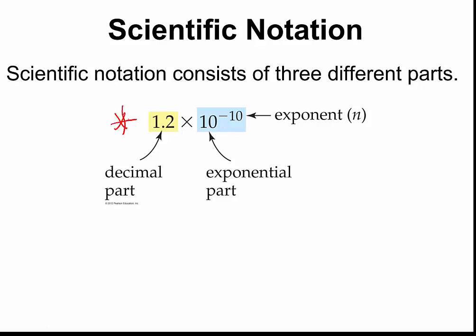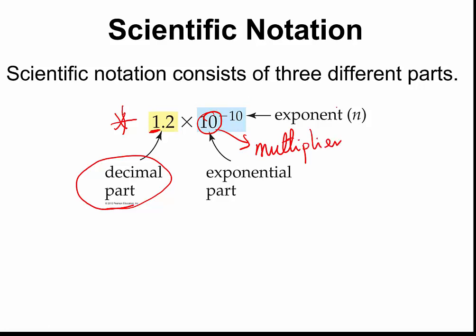This is what a number in scientific notation looks like. There are three parts: there is a decimal part, and the most important thing to note is that the decimal point is after the first number. There is the exponential part, which has two components: the multiplier and the exponent. The multiplier is usually 10, and the exponent is an integer — a positive or negative whole number.